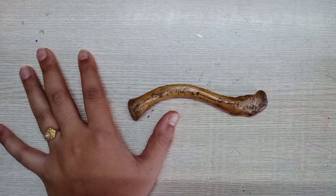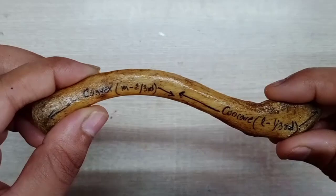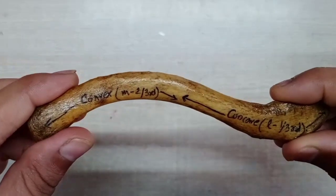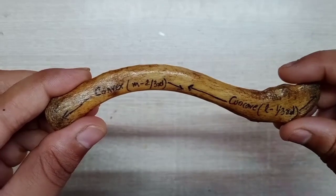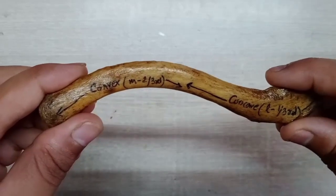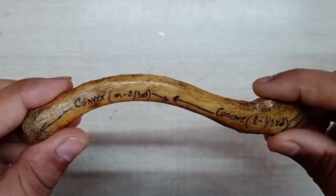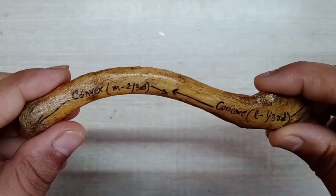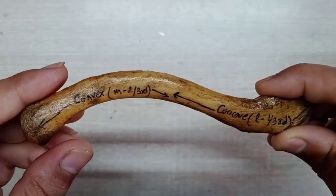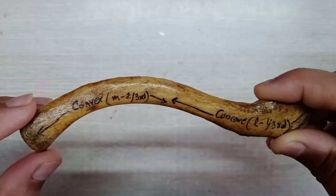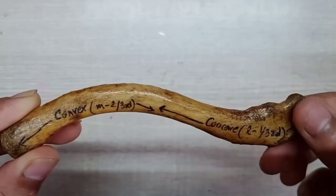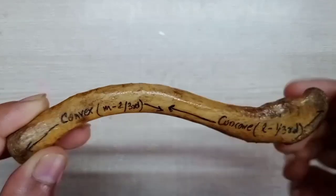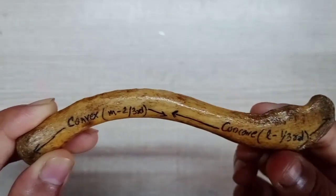So here we go for your clavicle side determination. The clavicle bone is a long bone which lies horizontally — this is the only long bone that lies horizontally in our body. When you determine the side, you have to focus on the three parts: the medial end, which is also known as the sternal end; the lateral end, which is also known as the acromial end; and the shaft of the clavicle.